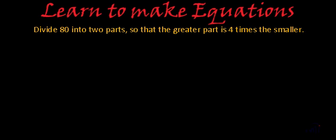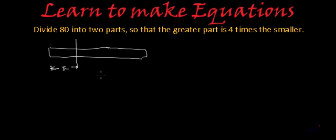So we have a number, suppose if this represents a number, then we have to divide it in such a way that if this much represents x, the remaining part will be four times of this value. So that means this much will be four times x, right?